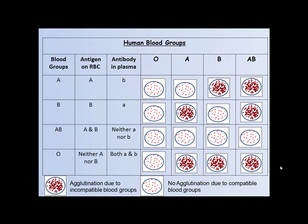The chart shows human blood groups with the antigen present on RBCs and antibody in plasma. Blood group A: individuals have antigen A on the surface of their RBCs and B antibodies in their plasma. Blood group B: individuals have B antigen on RBCs and A antibodies in their plasma. Blood group AB: individuals have both antigens A and B on their RBCs and no antibodies in their plasma. Blood group O: individuals lack A and B antigens on their RBCs but have both A and B antibodies in their plasma.